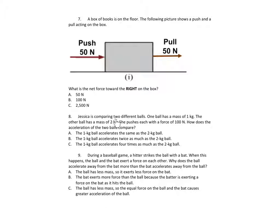Number 8. Jessica is comparing two different balls. One ball has a mass of 1 kg. The other ball has a mass of 2 kg. She pushes each with a force of 100 N. How does the acceleration of the two balls compare? A. The 1 kg ball accelerates the same as the 2 kg ball. B. The 1 kg ball accelerates twice as much as the 2 kg ball. C. The 1 kg ball accelerates four times as much as the 2 kg ball.